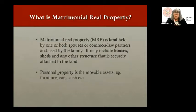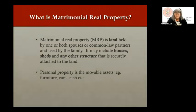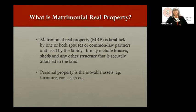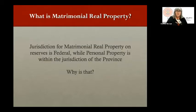So what is matrimonial real property? Matrimonial real property is the land held by one or both spouses or common law partners and used by the family. It could include houses, sheds, and any other structures securely attached to the land. Personal property is everything else — the movable assets: furniture, cars, the fish hut, cash, the sofa. It's important to distinguish between the two.